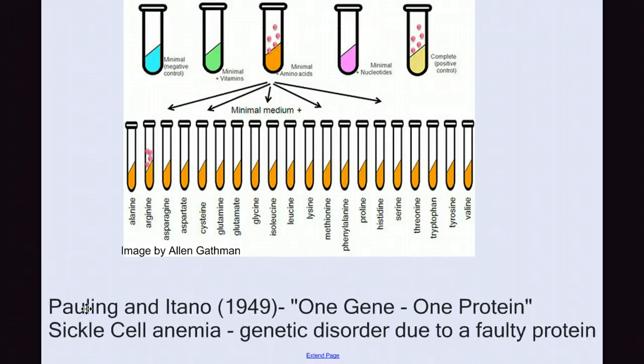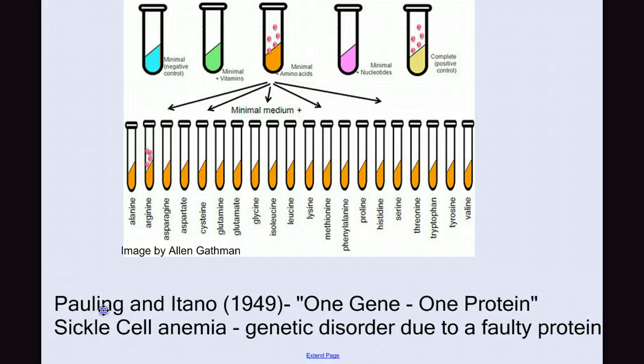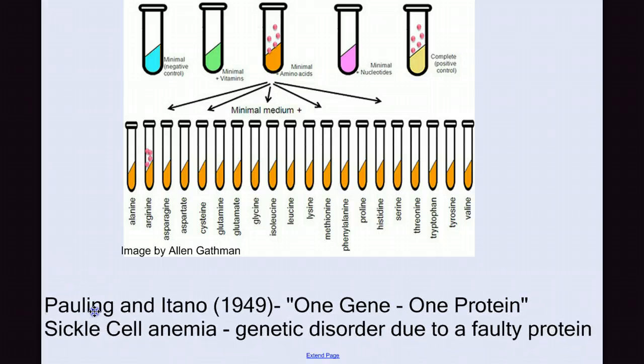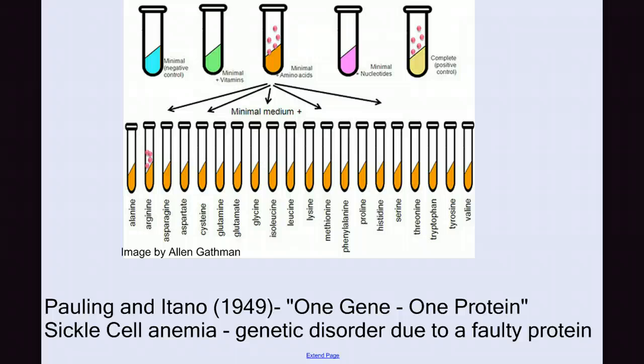Later in 1949, Pauling and Itano kind of modernized this idea and said that it's one gene, one protein, not necessarily one enzyme, as they studied sickle cell anemia and found that this genetic disorder was due to a faulty protein, which then changed the shape of red blood cells. So now we know that what DNA is doing is coding for the production of proteins.